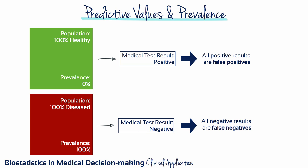In contrast, if everyone in a population tested has the disease, all negative test results will be false negatives, even for a very sensitive test. As prevalence approaches 100%, negative predictive value approaches zero.